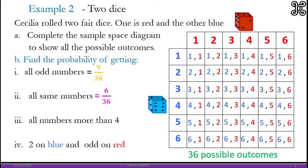All numbers more than 4. So we want all the numbers showing should be more than 4. So the options, it's 4 out of 36.